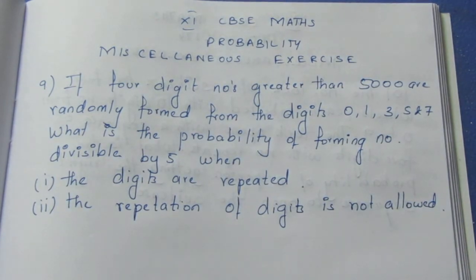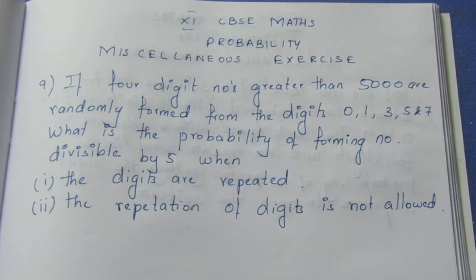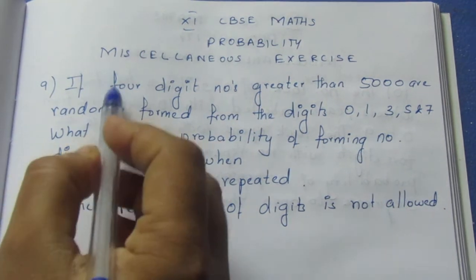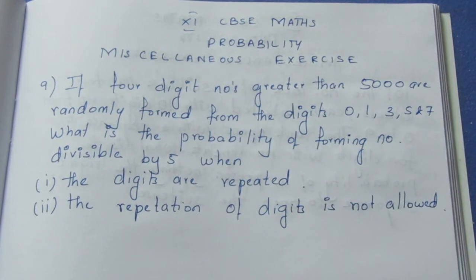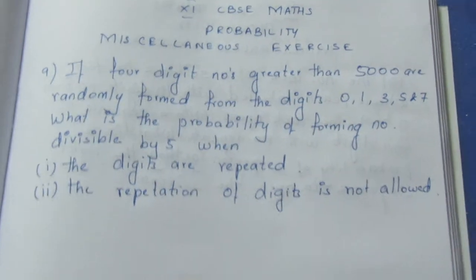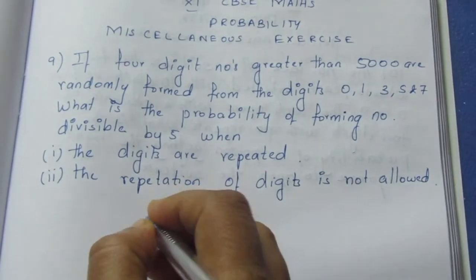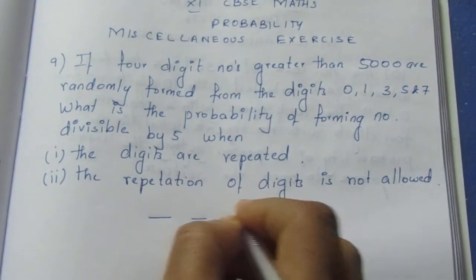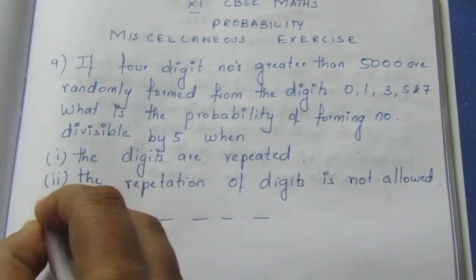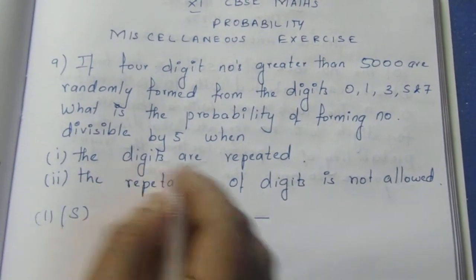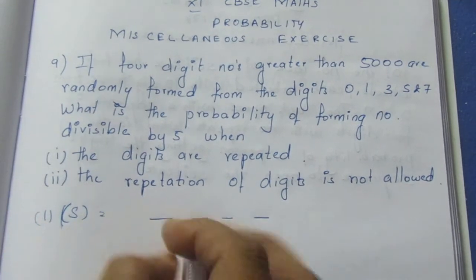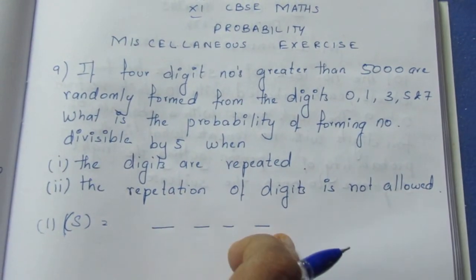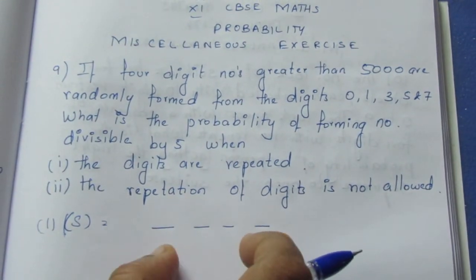First, for the first sample space model with repetition allowed. The sample space is given. The condition is a 4-digit number greater than 5000. So I will draw 4 digit places. For the first digit, repetition is allowed.